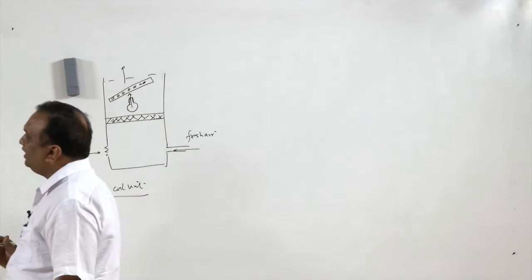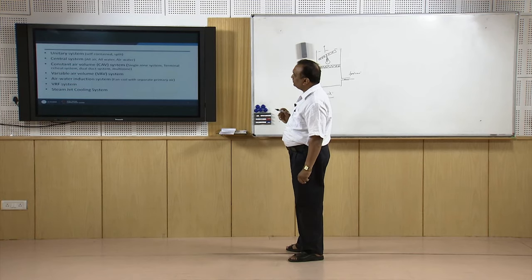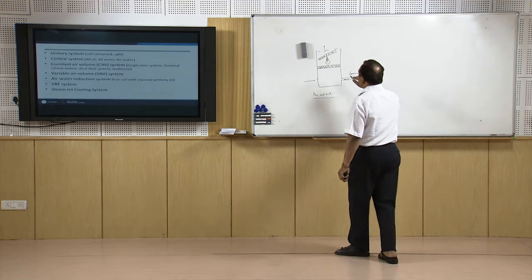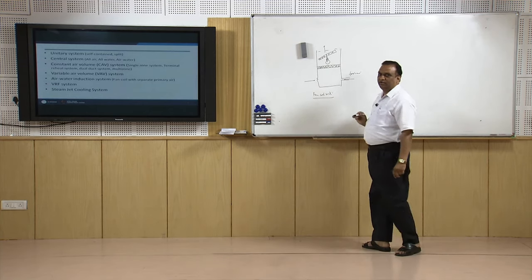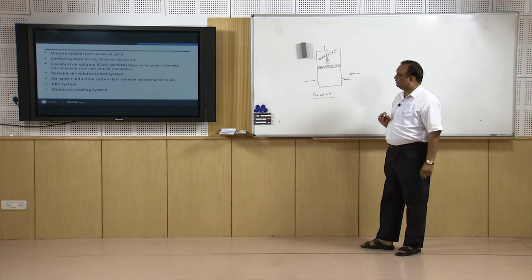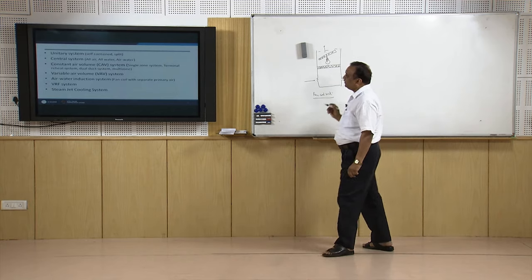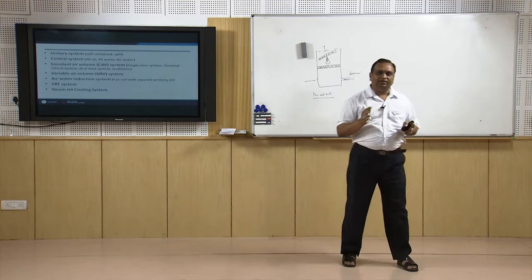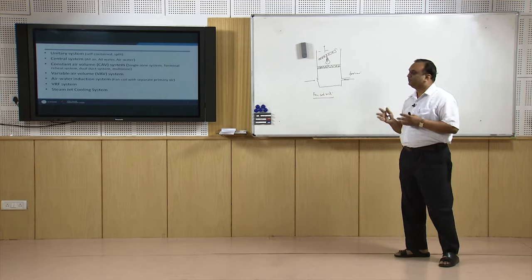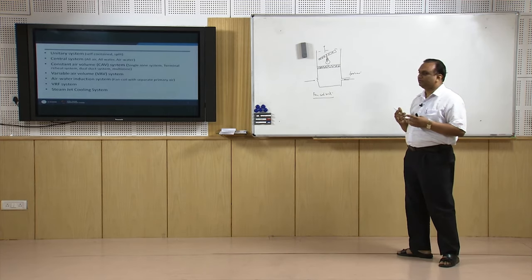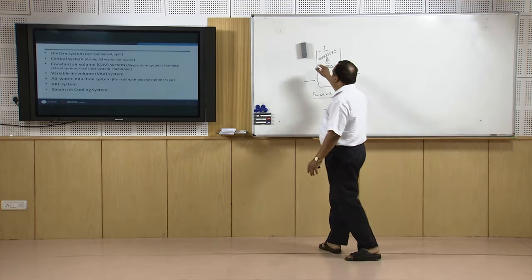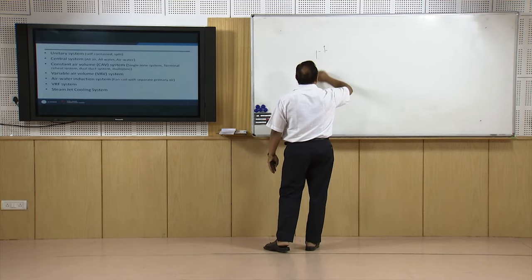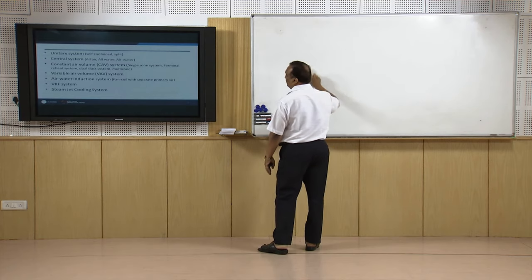This is all-air system or all-water system where fan coil units are used. A third type is the air-water system, which takes benefit of both air and water systems — the cooling is done with the help of both air and water.